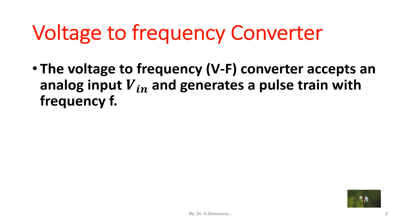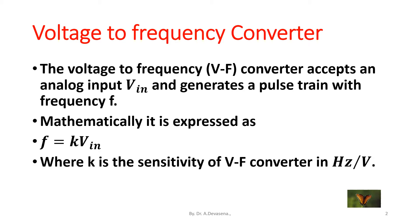The voltage to frequency converter accepts an analog input V_in and generates a pulse train with the frequency f. Mathematically it is expressed as f equals k times V_in, where k is the sensitivity of voltage to frequency converter in hertz per volt.